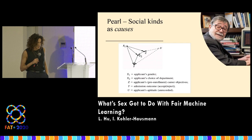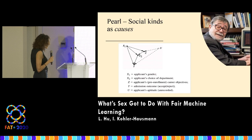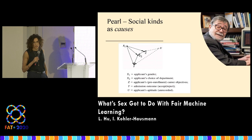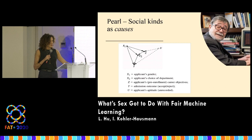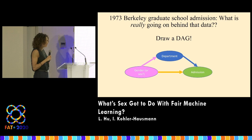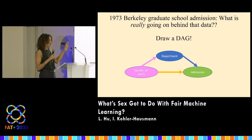This suggests we need some connection between the category and the outcome other than merely this observed pattern to determine whether it's discriminatory. One candidate, made popular through Judea Pearl's work, is to think of social kinds as causes — that's the relation we're looking for. Discrimination exists when there's a causal relation of some yet-to-be-determined type between the category and the outcome.